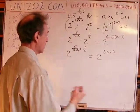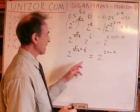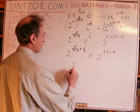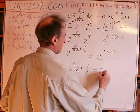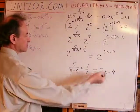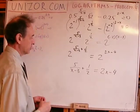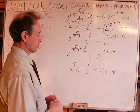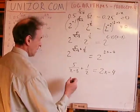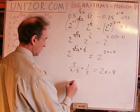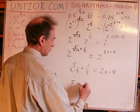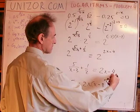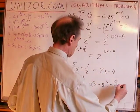If you multiply two exponential expressions with the same base, you add the exponents. So it's 2 to the power of (5 over (x minus 3) plus 1/2) equals 2 to the power of (2x minus 4). Since these two exponential expressions with the same base are equal to each other, their exponents must be equal. We can multiply both parts by (x minus 3) and get a quadratic equation, giving 5 equals 2x(x minus 3) minus 1/2 times (x minus 3).